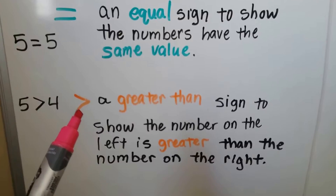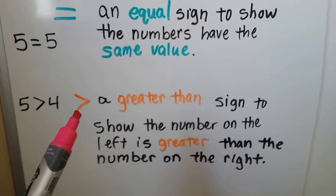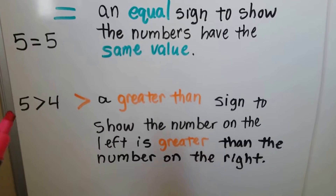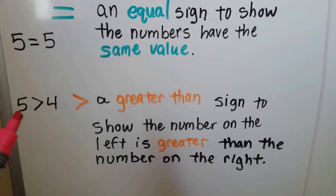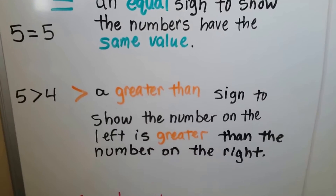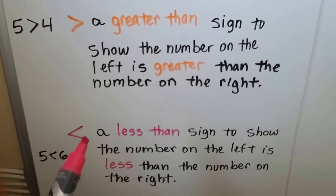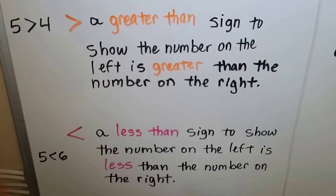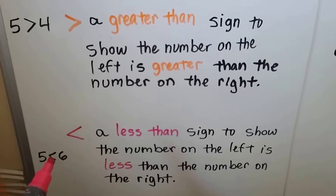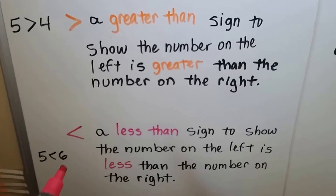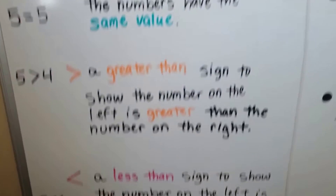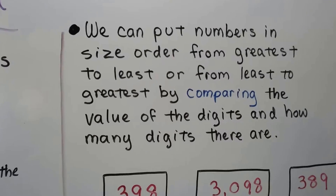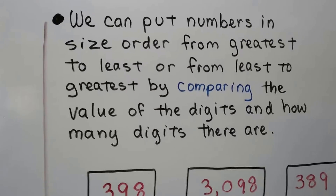We can use a greater than sign to show the number on the left is greater than the number on the right — 5 is greater than 4. We can use a less than sign to show the number on the left is less than the number on the right — 5 is less than 6.